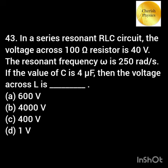In an LCR circuit, the voltage across R is 40 volt. The resonant frequency omega is 250 radian per second. If the value of C is 4 microfarad, then the voltage across L is?